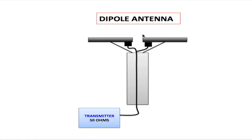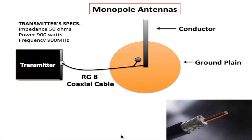Now if you're talking about a dipole antenna, this is different. With dipole antennas, both leads from the coaxial cable are connected to antennas that are identical, so you could reverse those leads. I have a video on dipole antennas in the description below if you'd like more information on that. So back to monopole antennas.